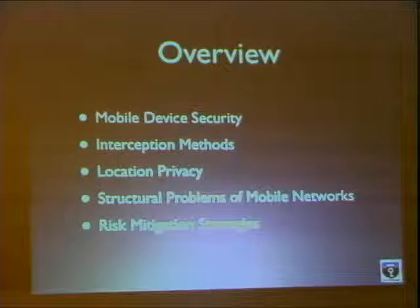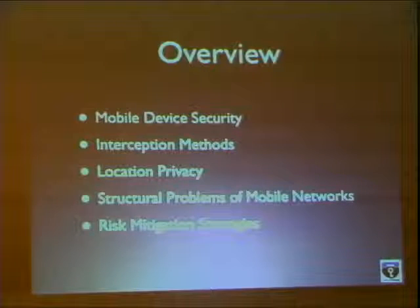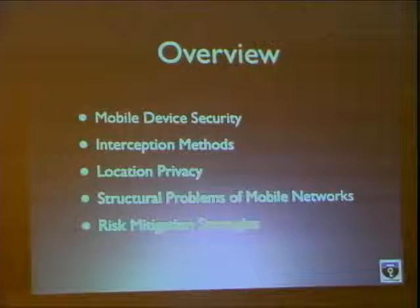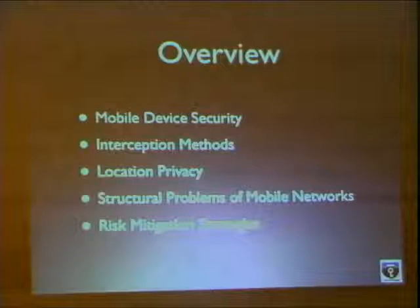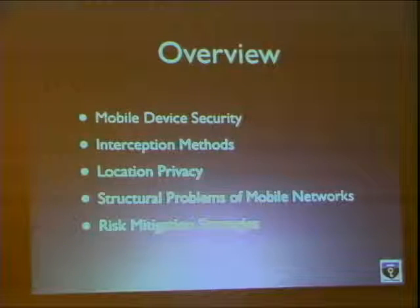The overview: we are first looking at the security of mobile devices itself, what attack vectors we have, what is the current state of the art in exploiting mobile devices, what is to be expected in the near future. Then we move on to interception methods for voice and data — what is currently being deployed, what is available, what will be available in the near future. Then we talk about location privacy and structural problems of mobile networks, and move on to some risk mitigation strategies — basically what can you do to solve these problems or at least not make them bite you as hard as they can.